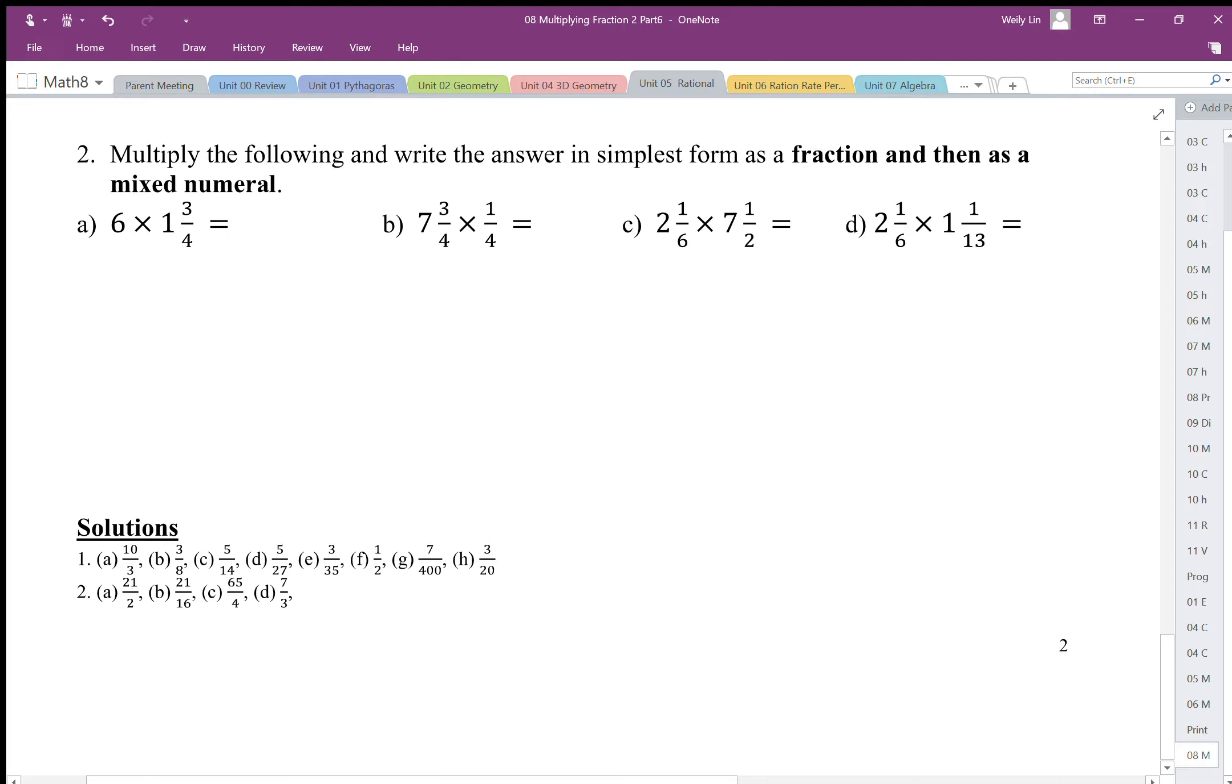So when we do this we want to convert this into six times an improper fraction. We're going to have four fourths plus three fourths is seven fourths.